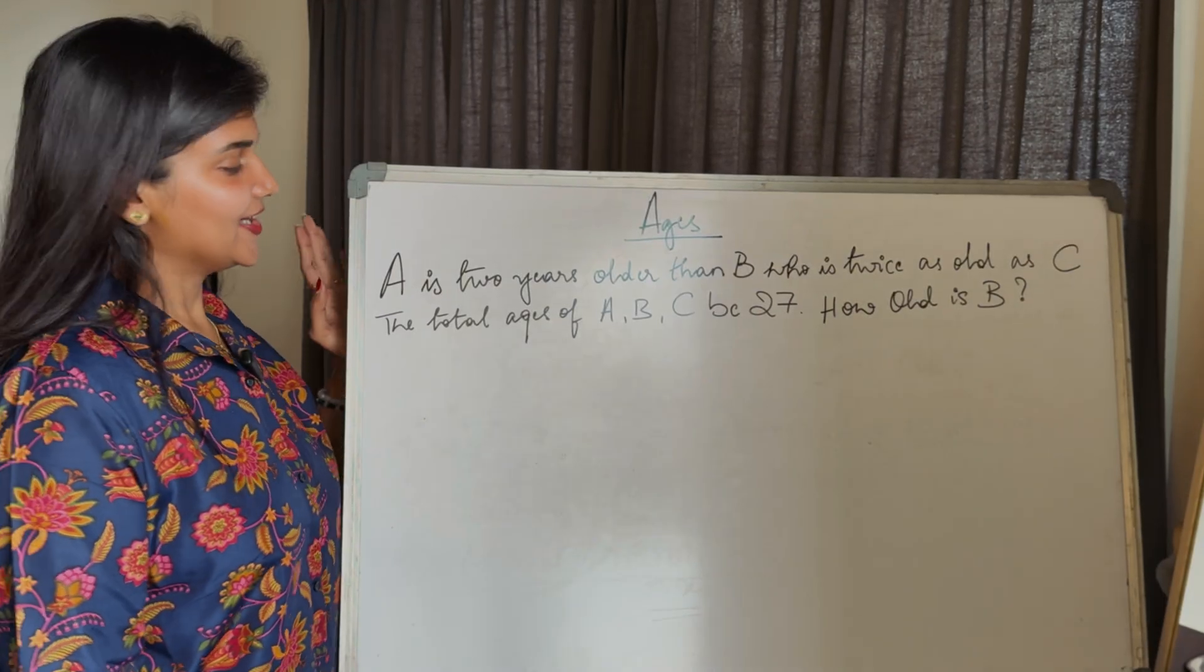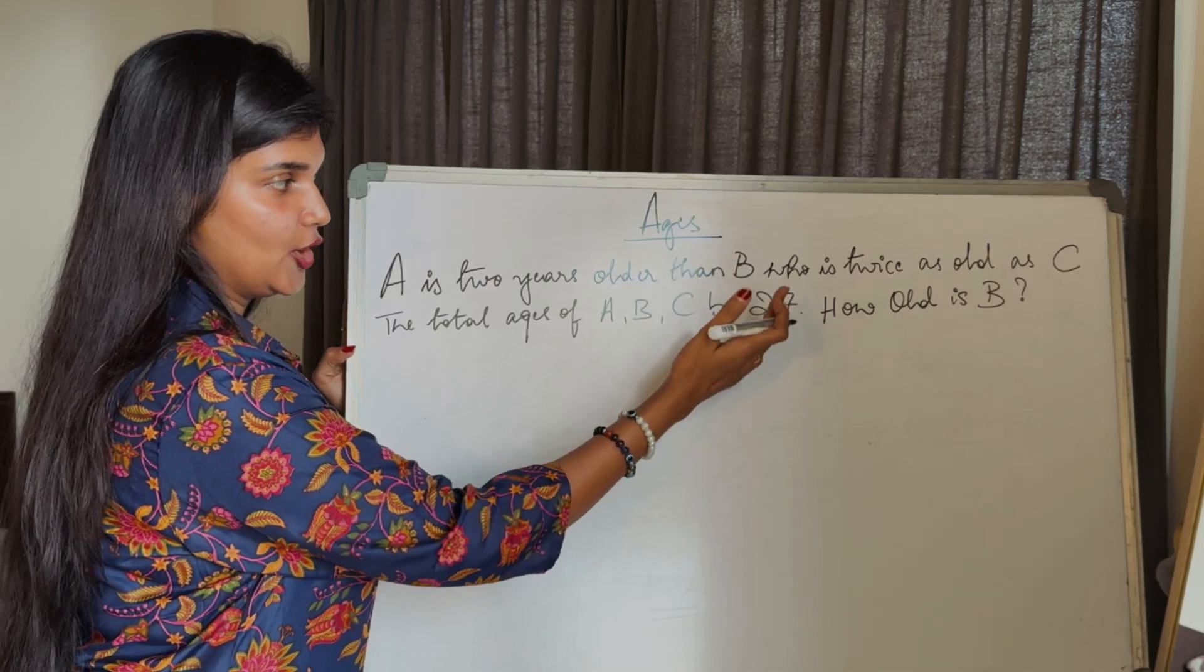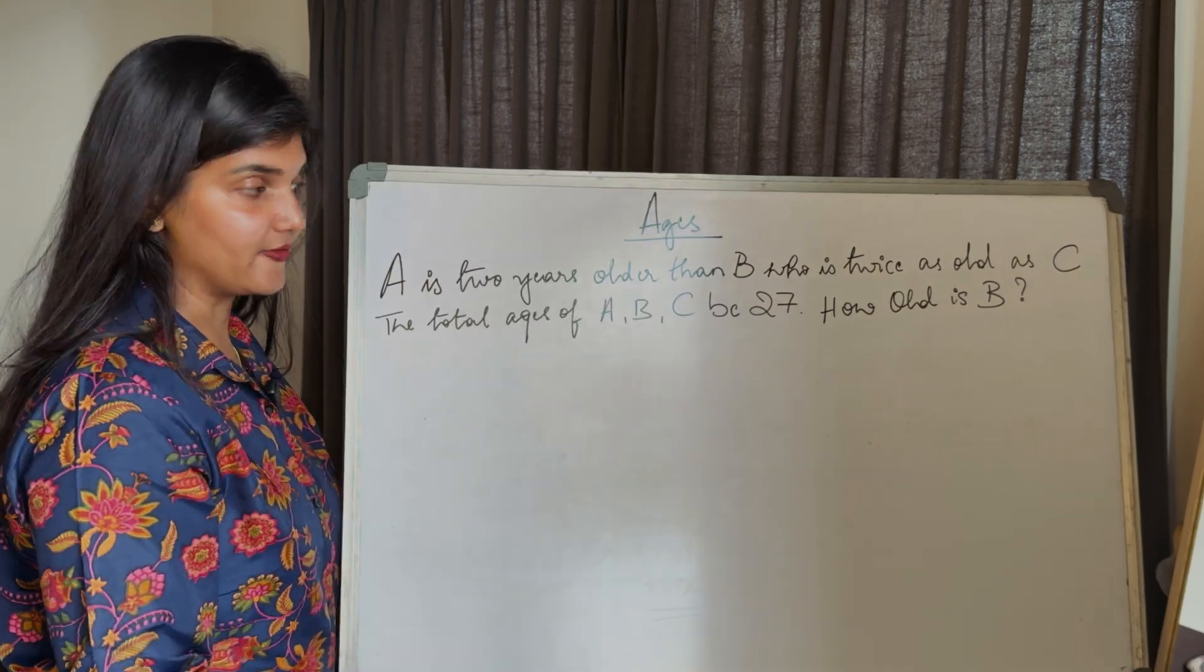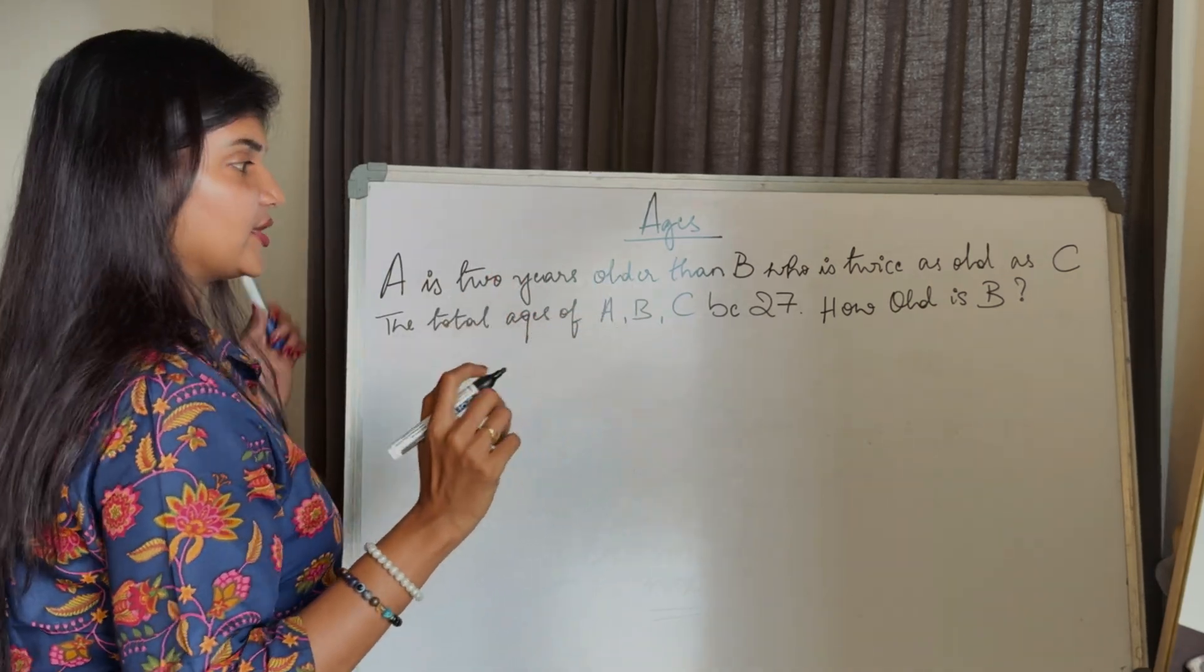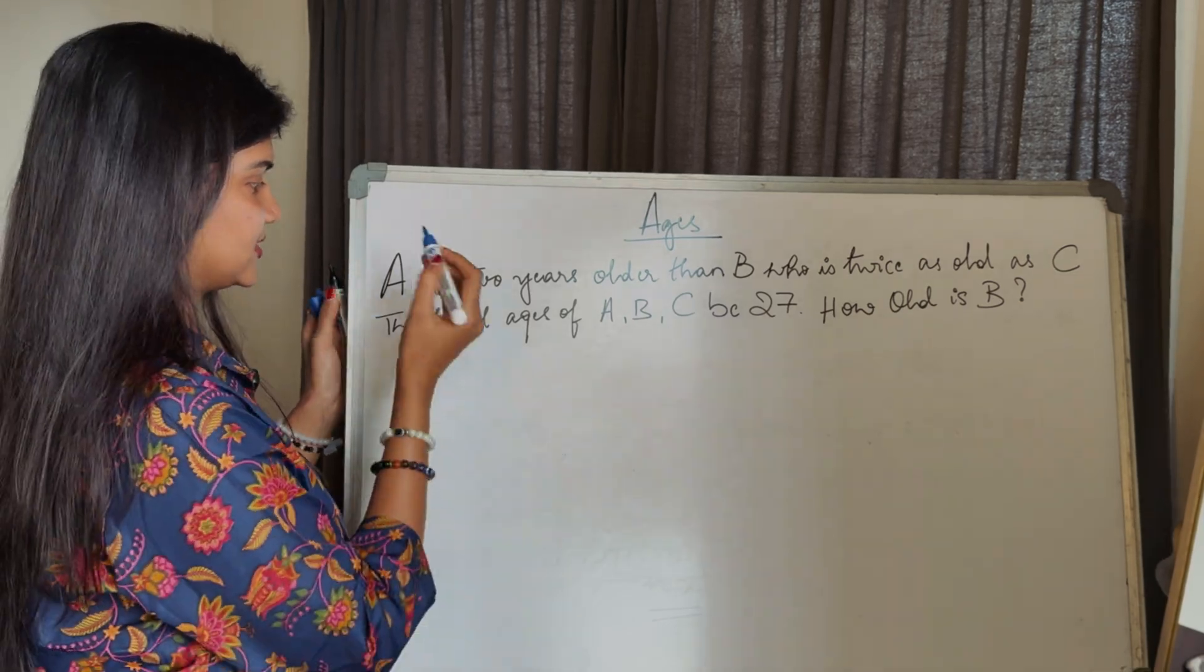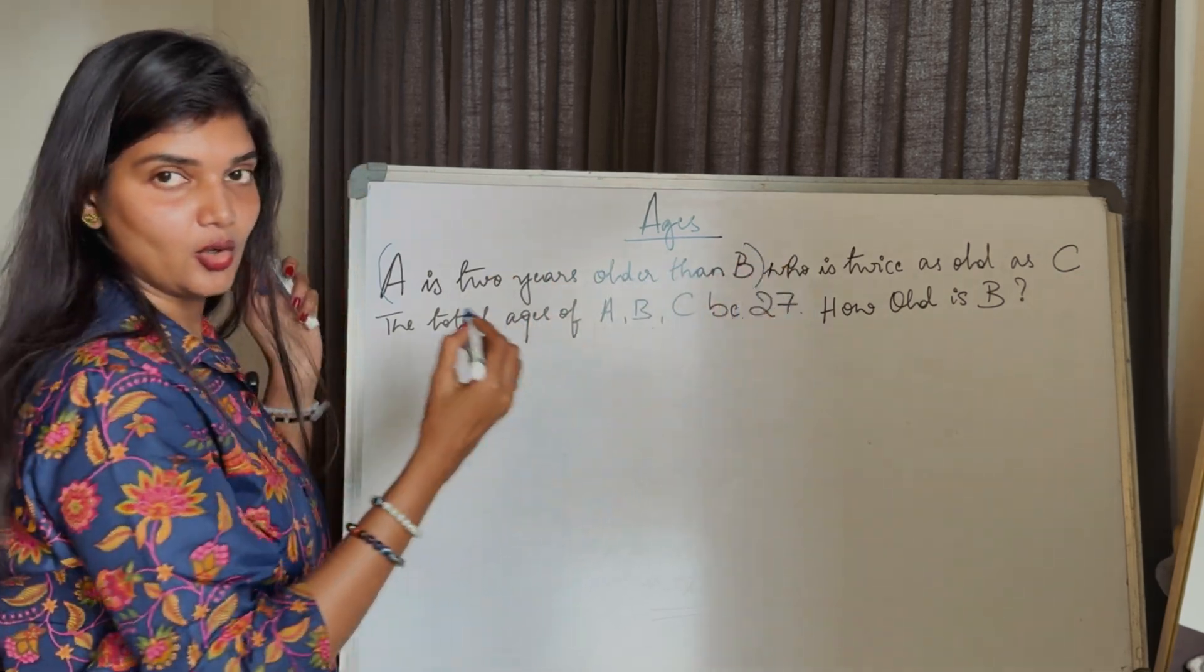Let's solve another question. Second question: A is two years older than B, who is twice as old as C. The total ages of A, B, C is 27. How old is B? Now first, we have to divide the question and solve part by part.